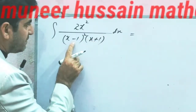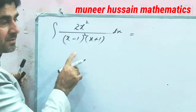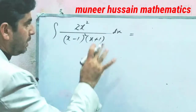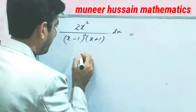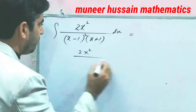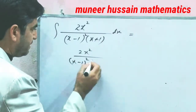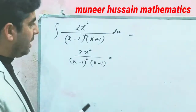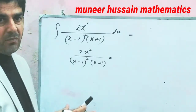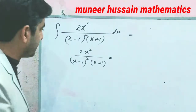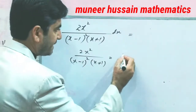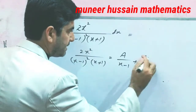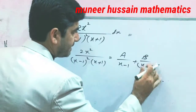Here, (x minus 1) whole square is a repeated linear factor and the other is non-repeated. We shall convert into partial fractions — we are resolving into partial fractions, which you have done in 10th and first year also. Here we have x minus 1 and x minus 1 squared, so first we take a over (x minus 1) and the second term as b over (x minus 1) squared.